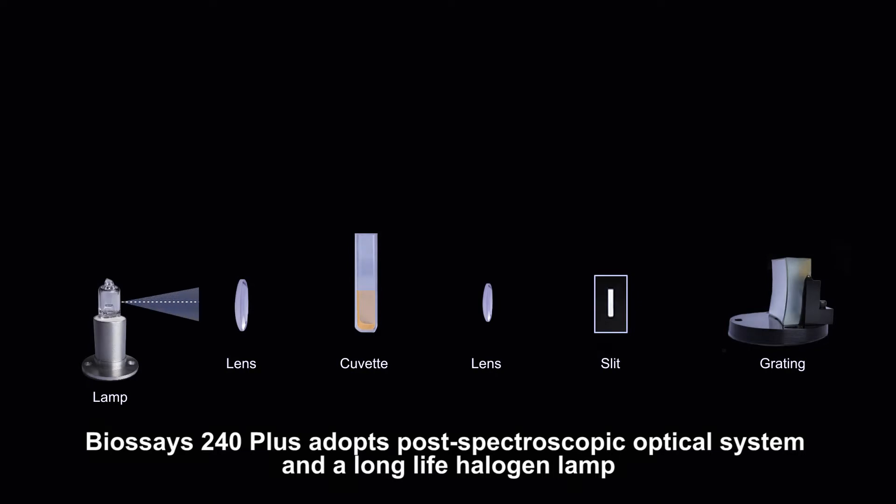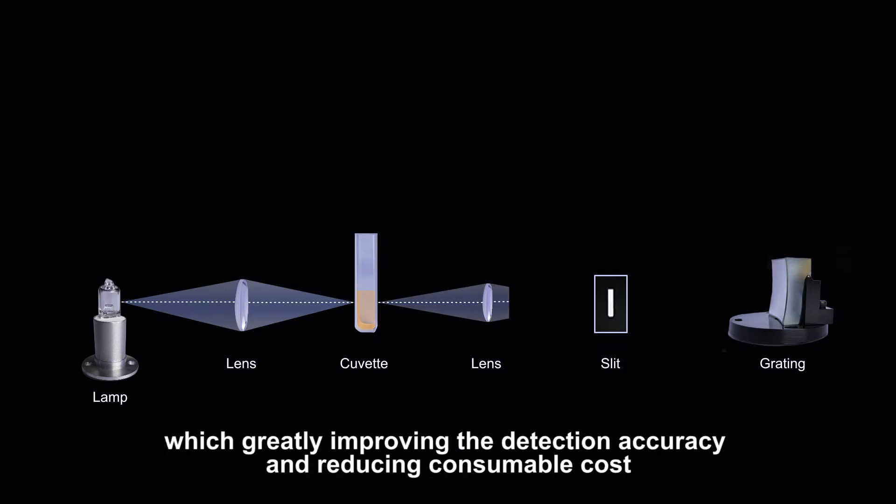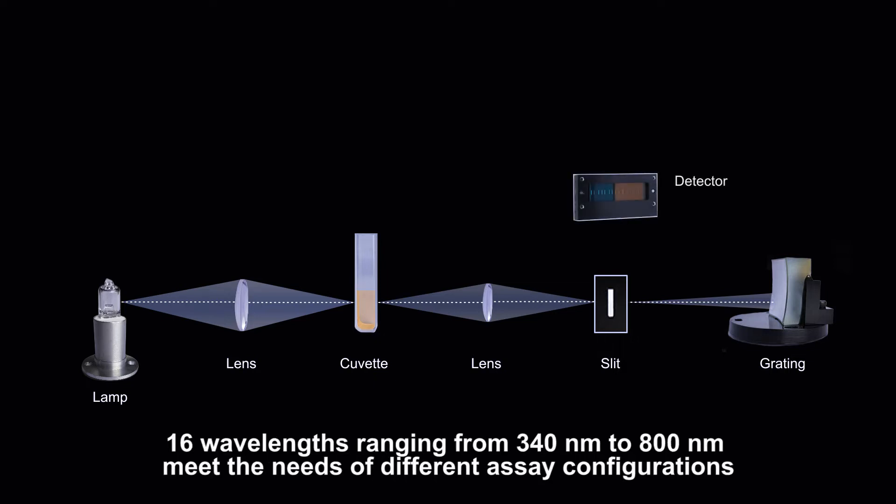BioSage 240 Plus adopts post-spectroscopic optical system and a long-life halogen lamp, which greatly improves the detection accuracy while reducing consumable cost. 16 wavelengths ranging from 340 nanometers to 800 nanometers meet the needs of different assay configurations.